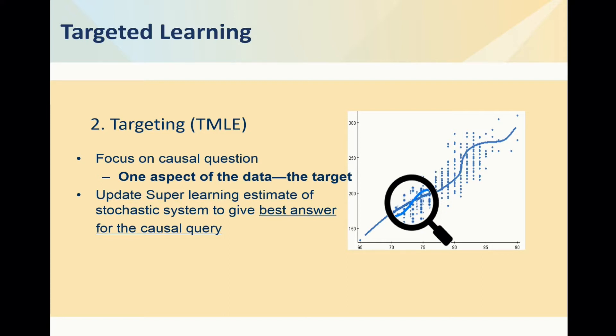Now you might say: we can use this fancy prediction algorithm, the super learner, to get the prediction of death for every patient under treatment and control, take the difference. The problem is that is not enough, and this is one of the big challenges in machine learning. People in machine learning didn't know how to get formal inference — like having confidence intervals. So you have to do something extra.